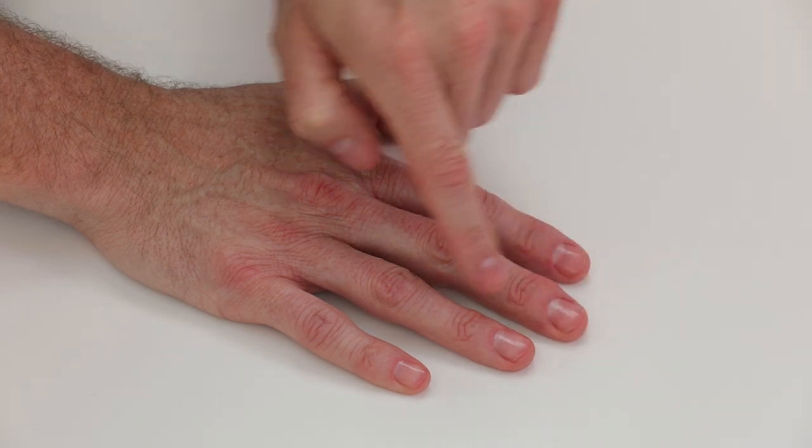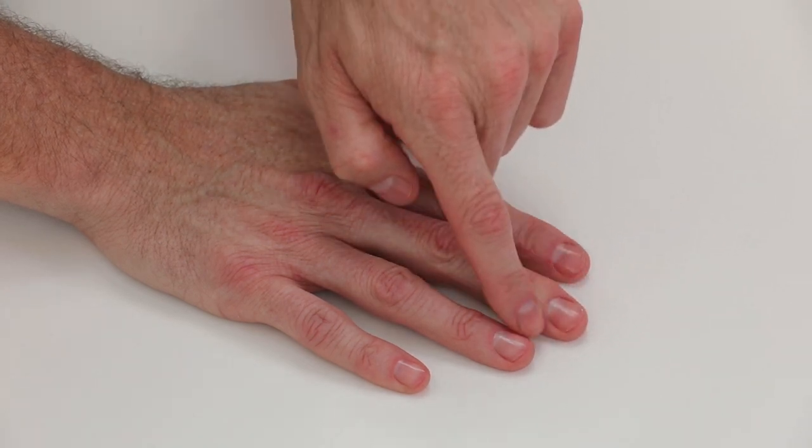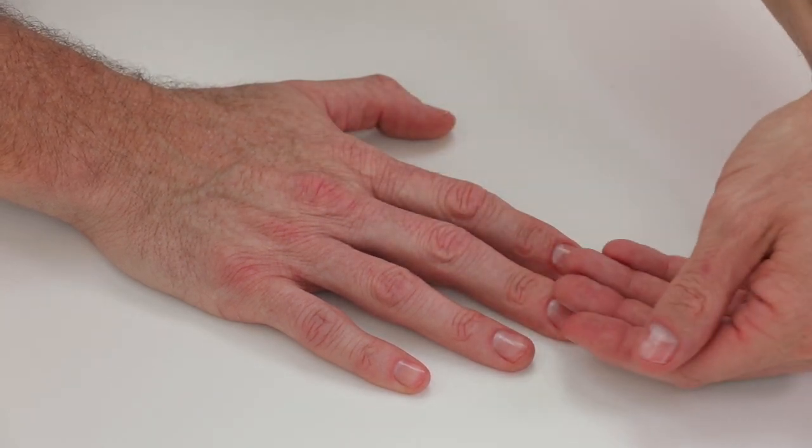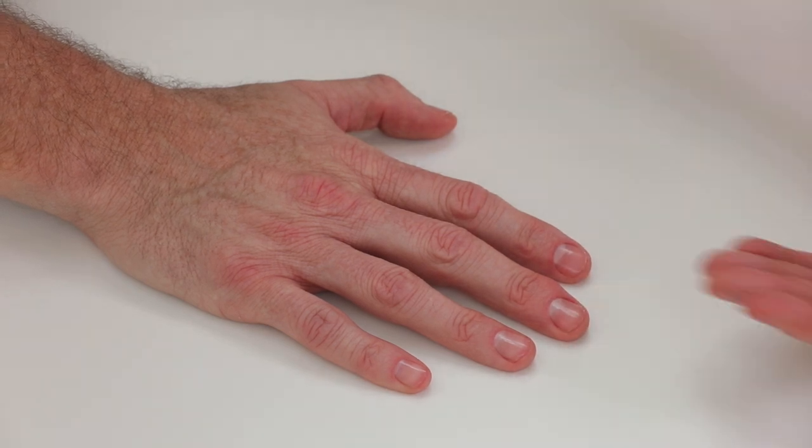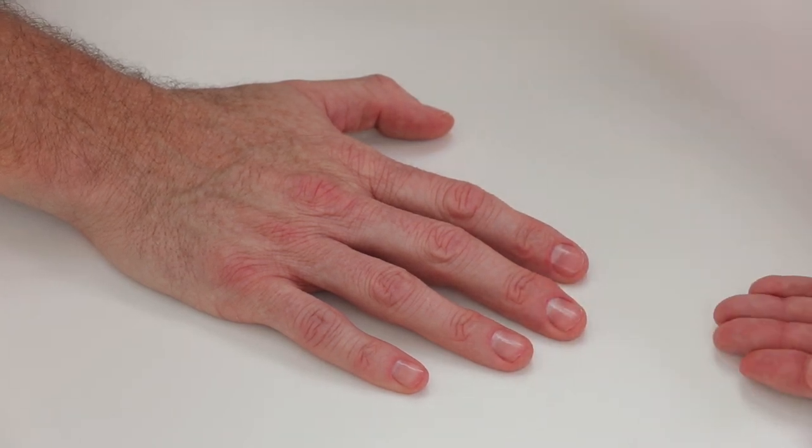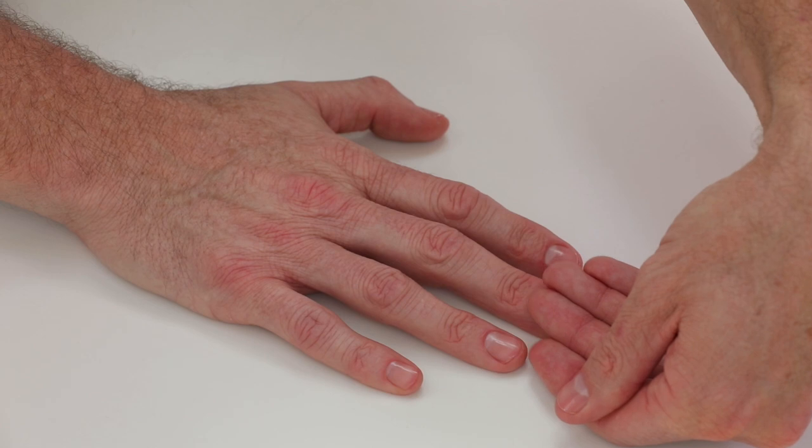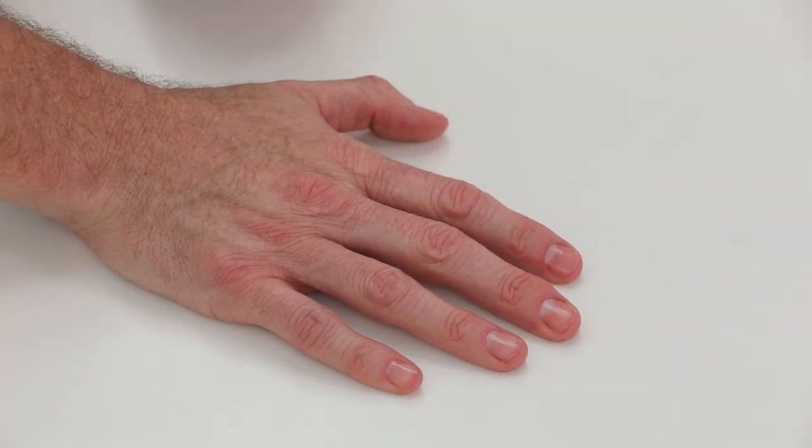Press it towards the cuticle, leaving a tiny free margin between the color and the skin, and simply pull the color out. Then do the same thing on the left side and back on the right side to get full coverage. Basically, you finish the nail in three strokes.